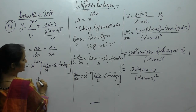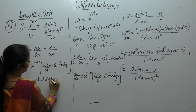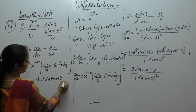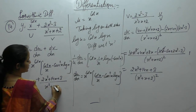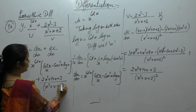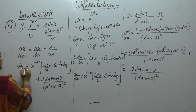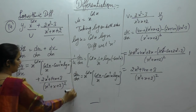So dy/dx = x^cot(x) · [cot(x)/x − cosec²(x)·log x] + [2x² + 14x + 3] / (x²+x+2)². This is the value of dy/dx.